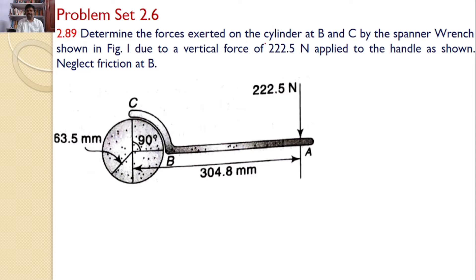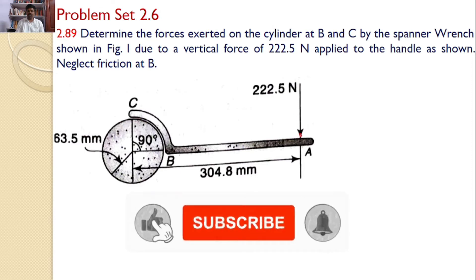Determine the forces exerted on the cylinder at B and C by the spanner wrench shown in figure, due to a vertical force of 222.5 Newtons applied to the handle as shown. Neglect friction at B. You can see the friction force here we would like to neglect. There is a wrench and 222.5 Newtons force is applied at this point.